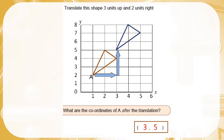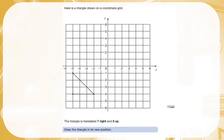Next question then. Here is a triangle drawn on a coordinate grid. The triangle is translated 7 right and up 5. Draw the triangle in its new position. Now this question doesn't give you a letter for any of the parts of your shape, so you can just choose which point of the shape you are going to translate from. But you have to remember that if you translate, for example, from the middle point, that you are drawing the shape from the same point again.